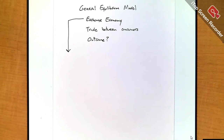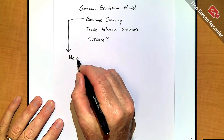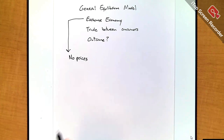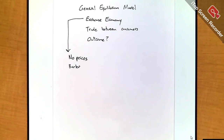Each consumer has some endowment of products and services, and then we're going to bring them together like in a marketplace and let them trade with one another. So in a nutshell, it's like consumer A and consumer B getting together and trading products. To start, we're going to do an exchange economy with no prices — sort of like barter, just as we did as kids after Halloween trading candy with friends.